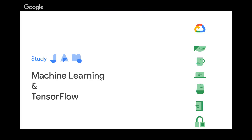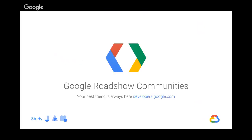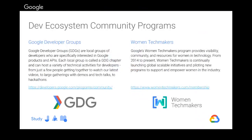This Study Jam is done by the Google Developer Ecosystem. In the developer ecosystem we have two types of programs. We have the Google Developer Groups, which are local groups of developers specifically interested in Google products and APIs. Each local group is called a GDG chapter and can host a variety of technical activities, from a few people watching videos to large gatherings with demos, tech talks, and hackathons. We also have Women Techmakers, a program that provides visibility, community and resources for women in technology.